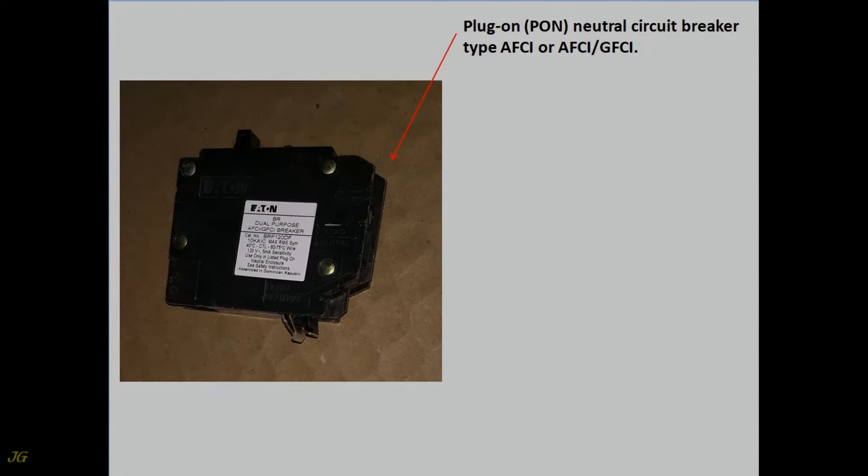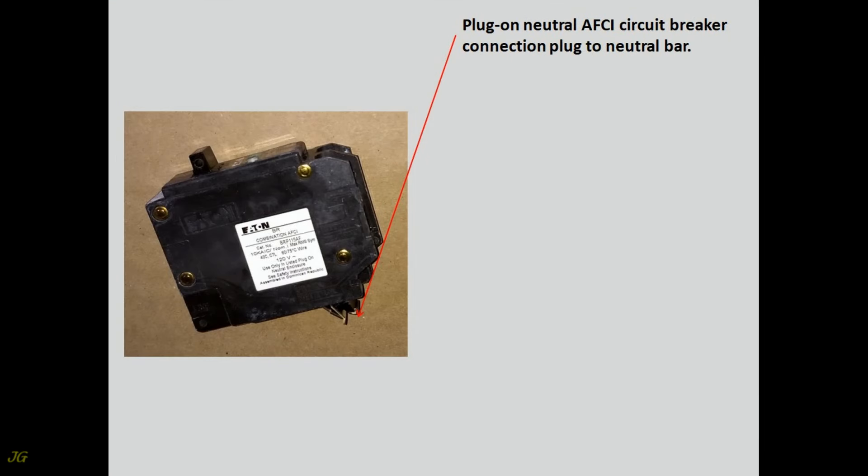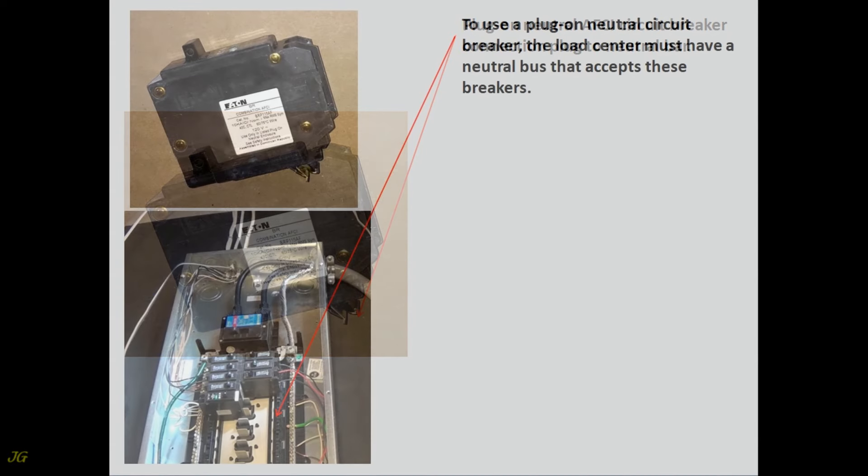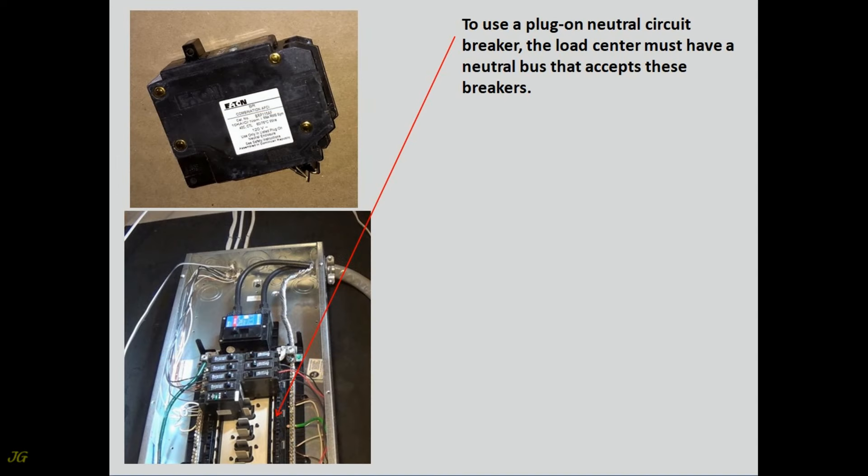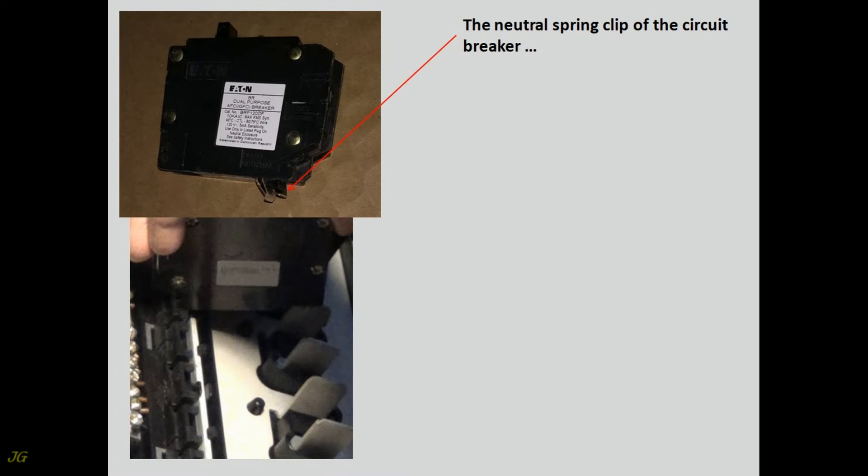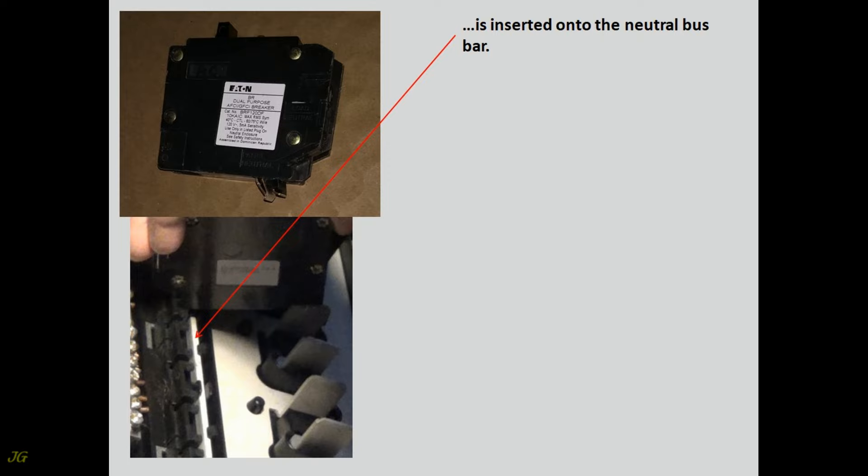Plug on, PON, neutral circuit breaker type AFCI or AFCI GFCI. Plug on neutral AFCI circuit breaker connection plug to neutral bar. To use a plug on neutral circuit breaker, the load center must have a neutral bus that accepts these breakers. The neutral spring clip of the circuit breaker is inserted onto the neutral bus bar.